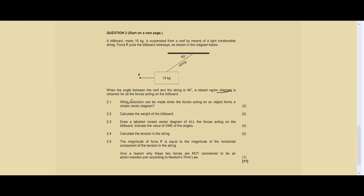Question 2.1 says what deduction can be made when the forces acting on an object form a closed vector diagram? Every time we have a closed vector diagram, that means our forces are at equilibrium. The object is in equilibrium, which means our resultant force or F net equals zero newtons. The net force is zero newtons.